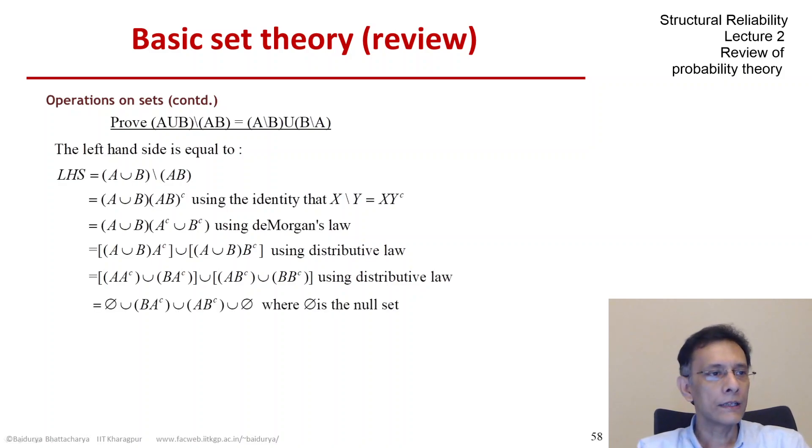We identify the null sets because A intersection A complement is the null set. Likewise, B intersection B complement is also the null set. Then we again use the identity in the reverse way: X difference Y is X intersection Y complement, which is nothing but the right-hand side. So it's proved.